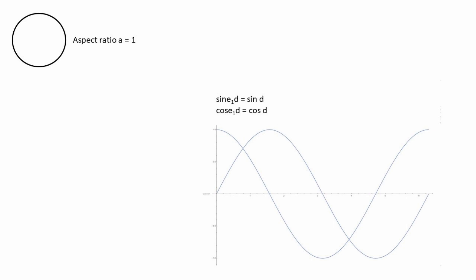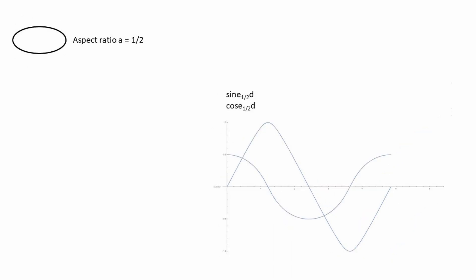So, here we plot sine and cosy for aspect ratio 1 and get the familiar sine and cos curves. Remember, the x-axis is the arc length, not the angle.